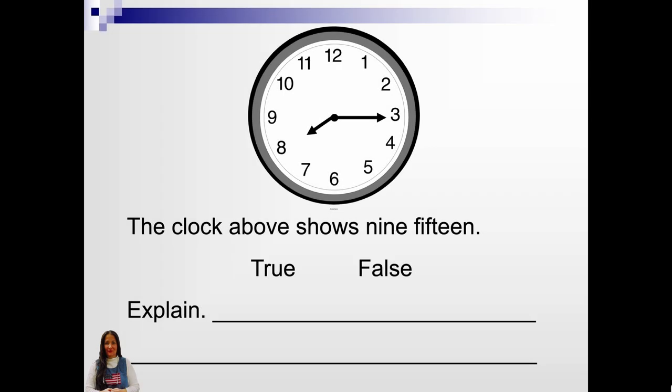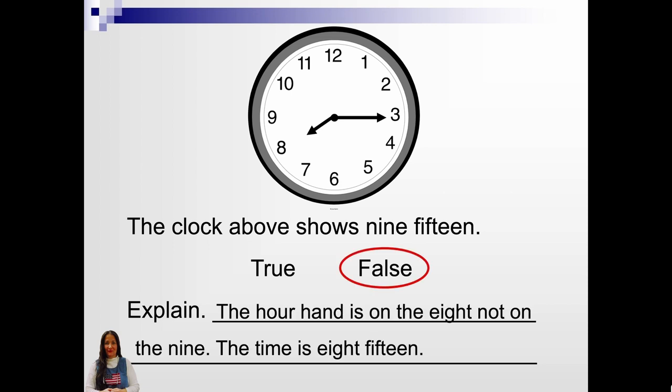This clock above shows 9:15. True or false? False. The hour hand is on the 8 and not the 9. The time is 8:15.